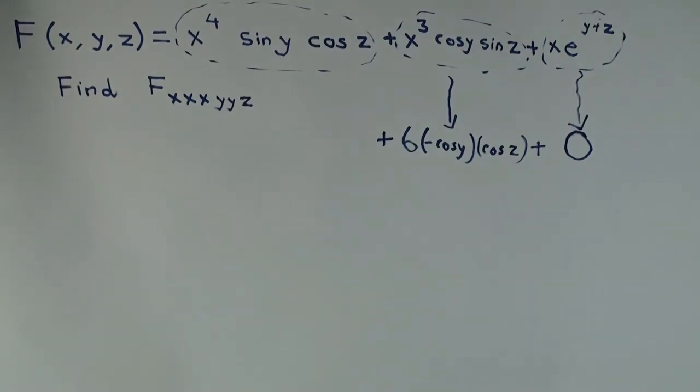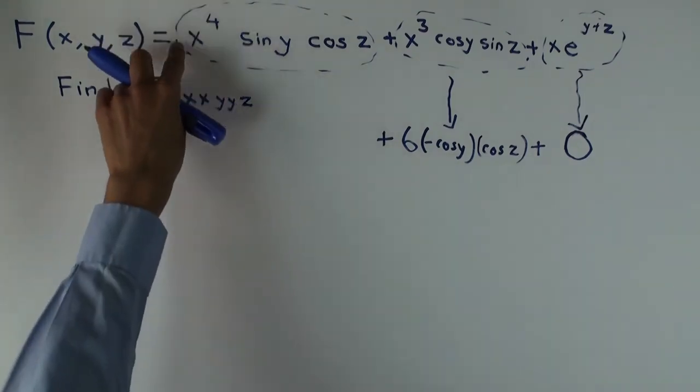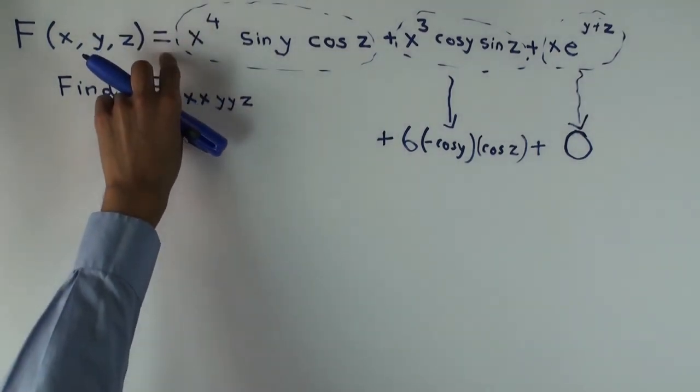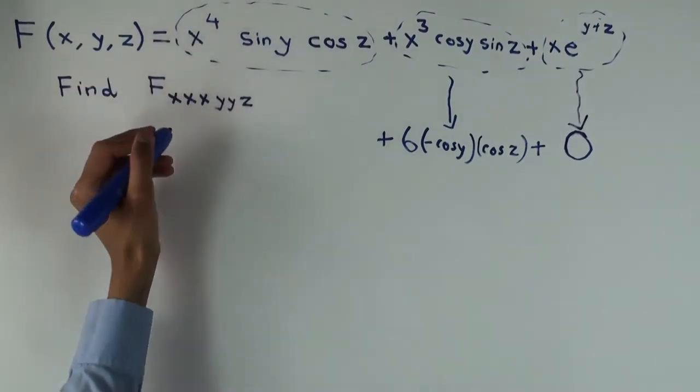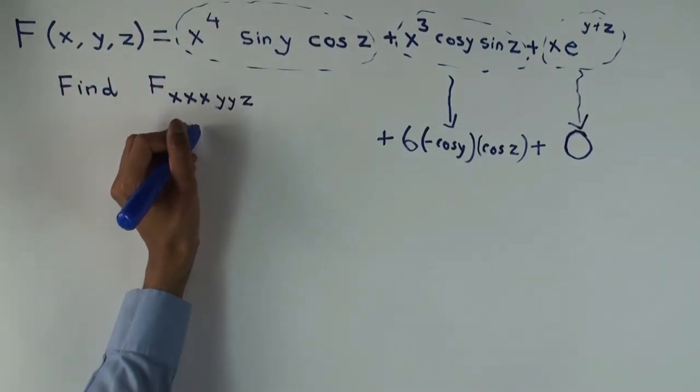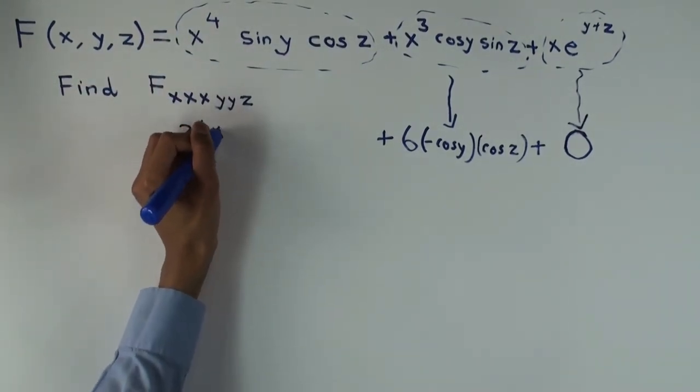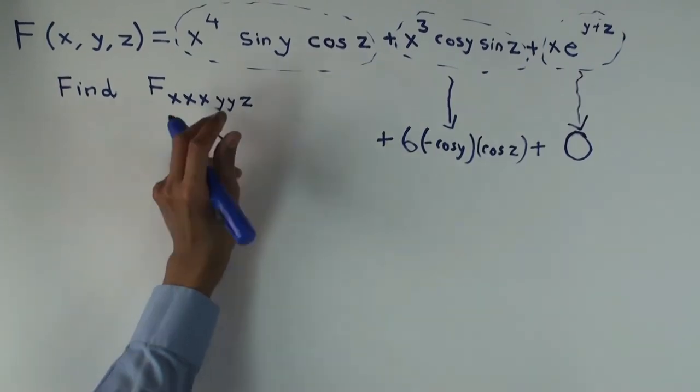What about this one? X to the four, you need to differentiate it? Three times. Three times. So you get four x cubed, then 12 x squared? 24 x. 24 x.